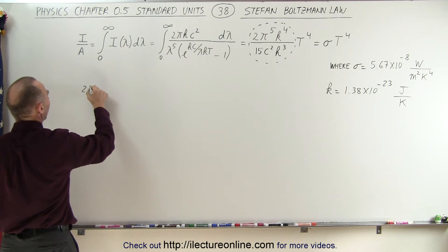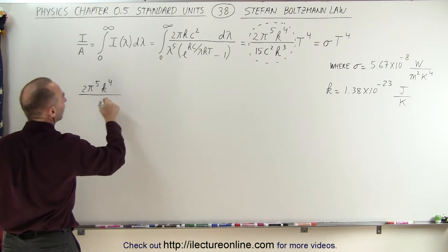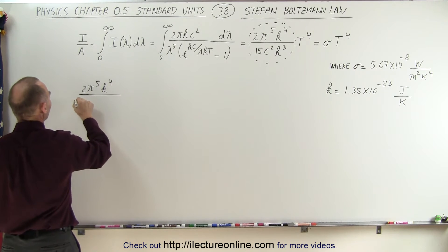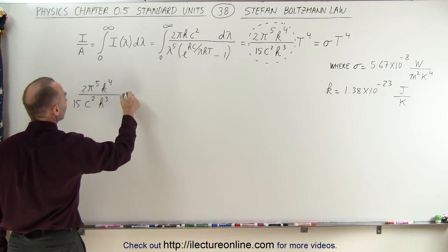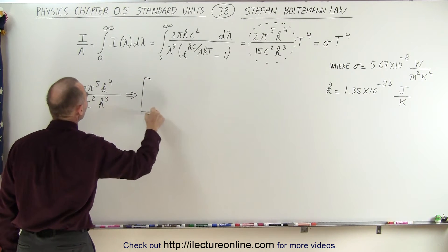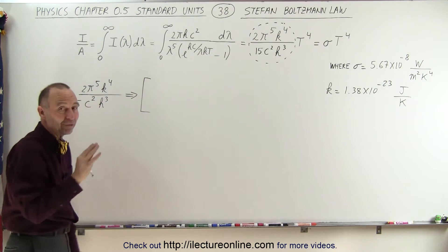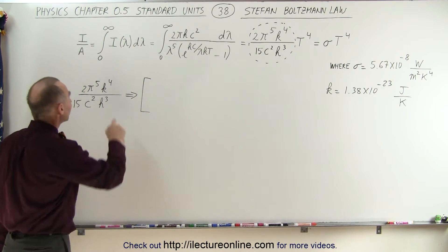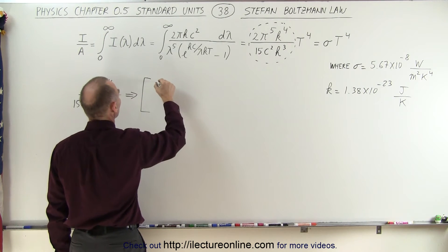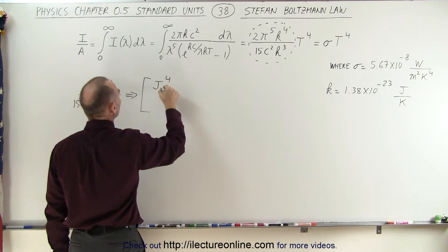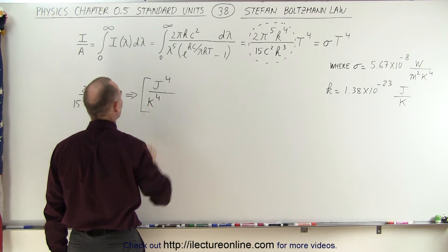So, 2π^5 k^4 divided by c, well we have a 15, c squared h cubed. h is of course Planck's constant, and the units for that will turn out to be as follows. 2π and 15 do not have units, those are just constants, but k has units. k will have units of joules per Kelvin, and since it's to the fourth power, it'll be joules to the fourth power divided by Kelvin to the fourth power.